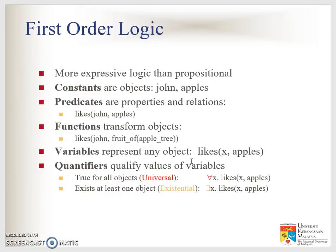First order logic: constants are symbols representing objects, and it also has predicates, functions, and variables. On top of that, it introduces quantifiers — the universal quantifier (upside-down A) and the existential quantifier (backwards E).